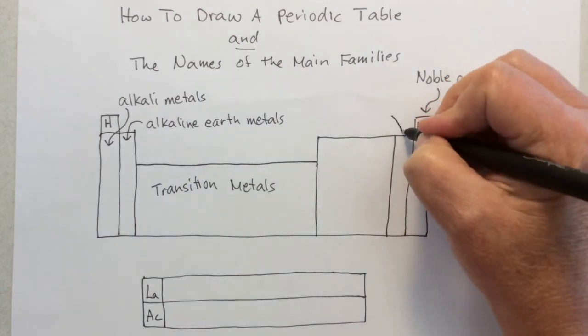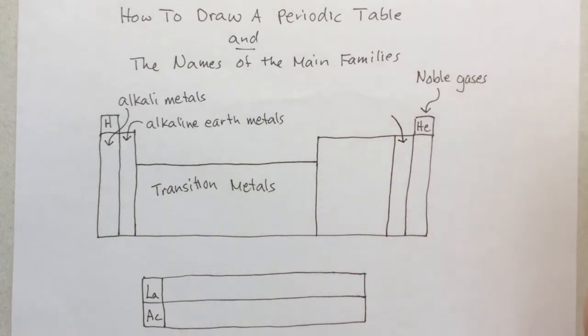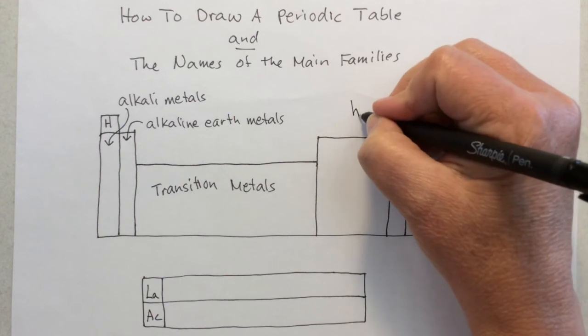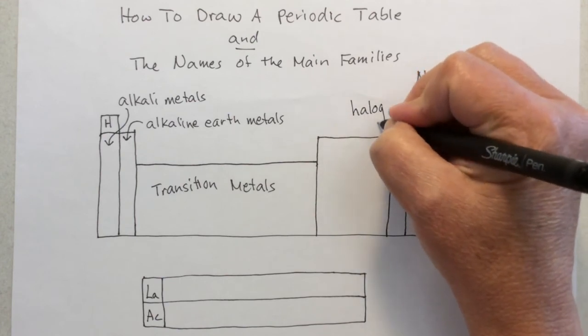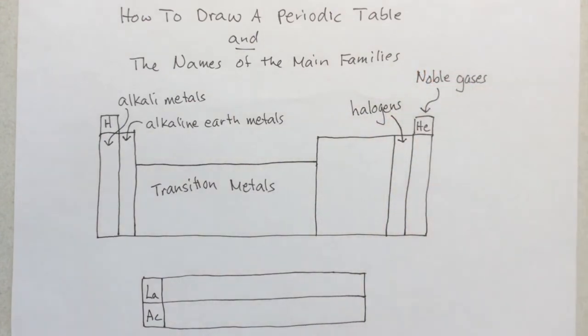Then next door to that, starting with fluorine on down, are the most reactive elements on the periodic table. Those are the halogens. Halogens means salt makers. They've got chlorine in there, and everybody knows sodium chloride is salt.